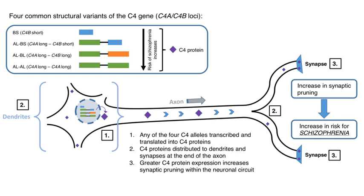Moreover, they implicated that a lack of C4 activity could be attributed to the structural differences between the alpha chains. Nevertheless, Carroll and Porter demonstrated that there is a 1500 bp region that acts as an intron in the genomic sequence, which they believed to be the known C4D region, a by-product of C4 activity.